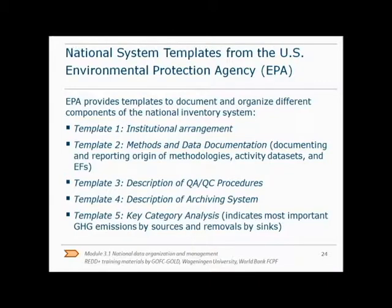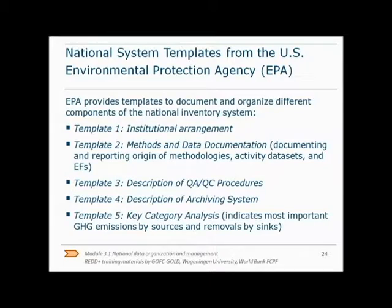The Environmental Protection Agency provides templates to document and organize different components of the national inventory system. The templates can help inventory teams in documenting and reporting the methodologies, data sets, and assumptions used to estimate emissions and removals from each category. They can also be used as supporting information for national communications to provide transparency on the data and methods used, and help future inventory teams in preparing future inventory reports. For example, template 3 asks for a description of QA and QC procedures and offers step-by-step guidance and checklists for doing this.